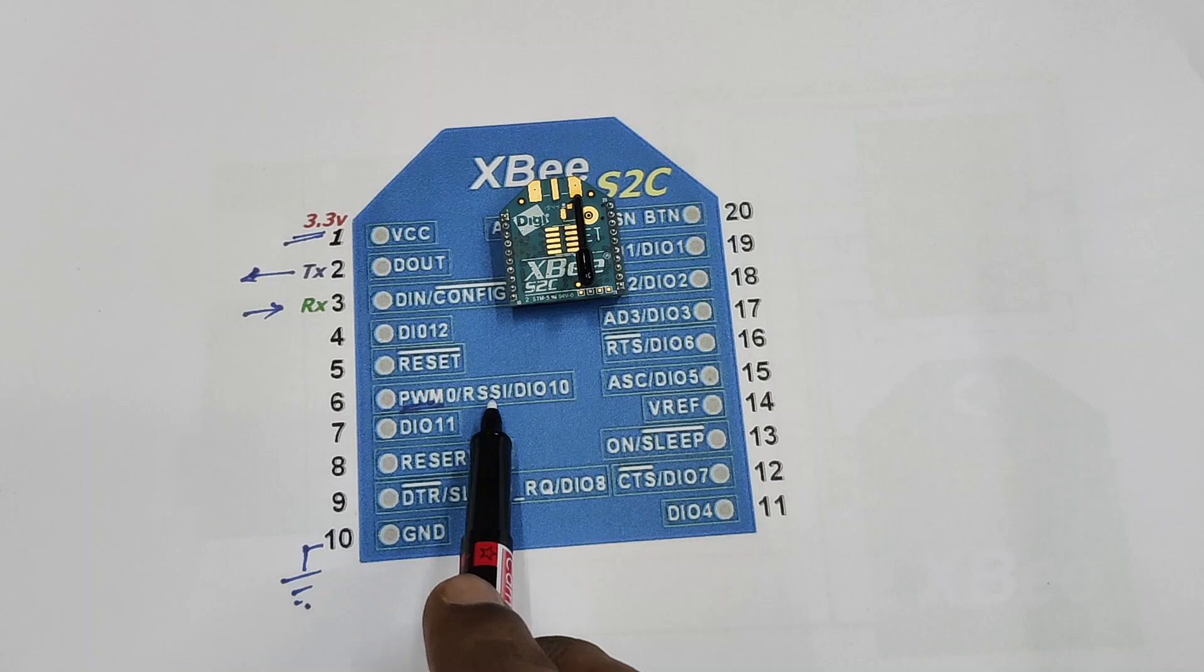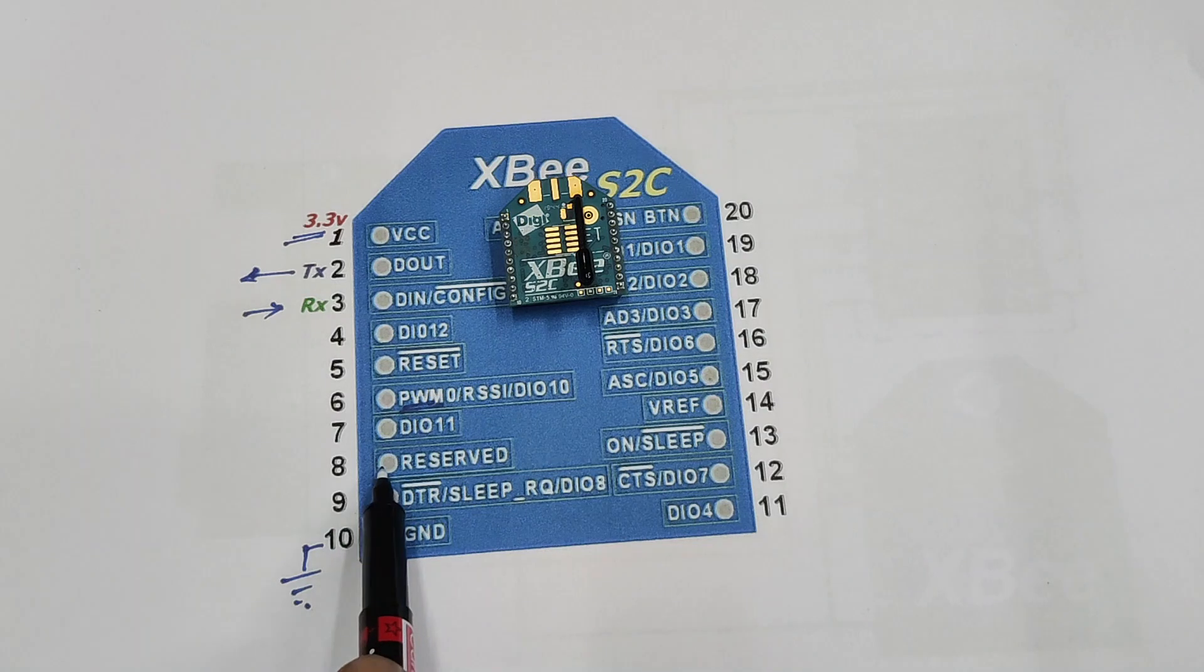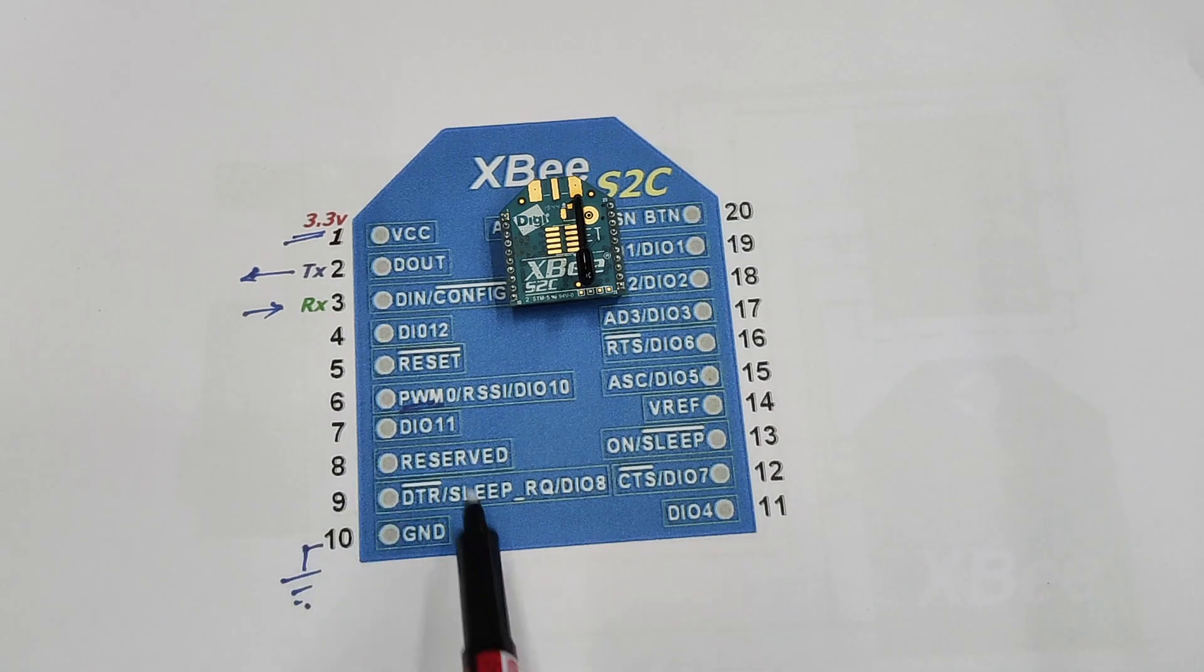Pin 9 acts as IO 8 and also data terminal ready DTR and also sleep request pin. Pin 8 is not used, it is reserved.